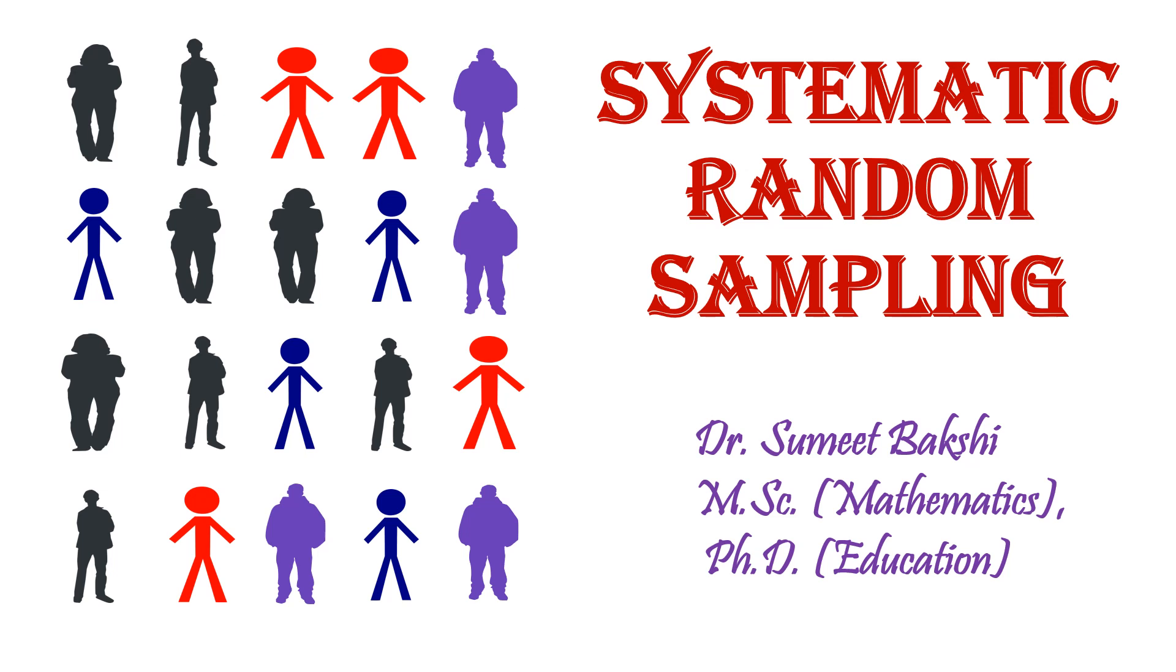As the name suggests, samples are drawn randomly, but there is some fixed system to draw the sample. That's why it is called Systematic Random Sampling.